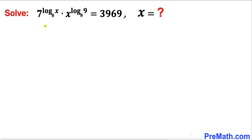Welcome to pre-math. In this video we are going to solve this given exponential equation that involves logarithm. Here's our equation: 7 to the power log of x with base 8, times x to the power log of 9 with base 8, equals 3969. Now we are going to find the value of x.